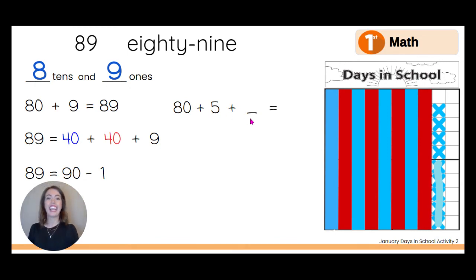How much is the missing number? What would go right here? 80 plus 5 is 85. And then how many more ones did we have? 1, 2, 3, 4. So 4 is the missing number in that equation. Nice job.